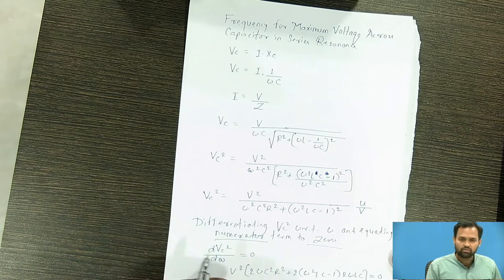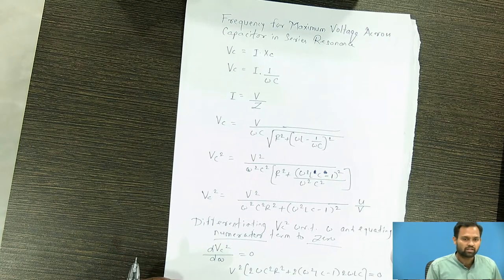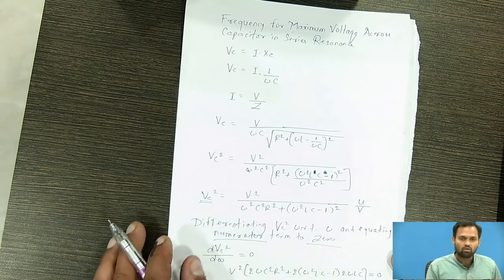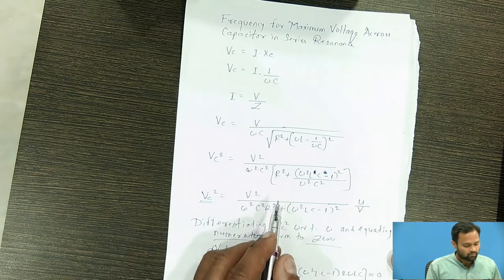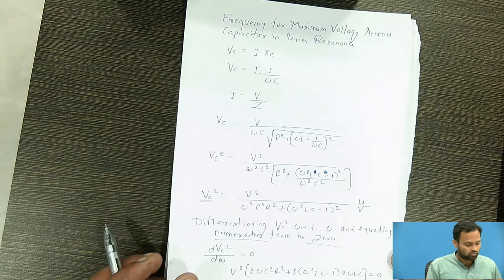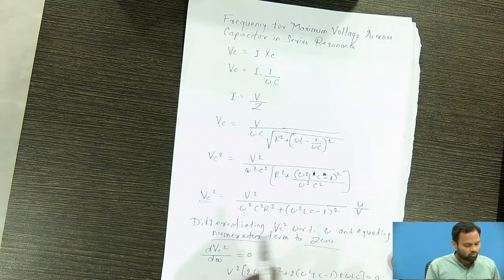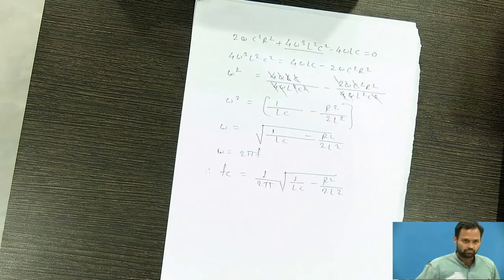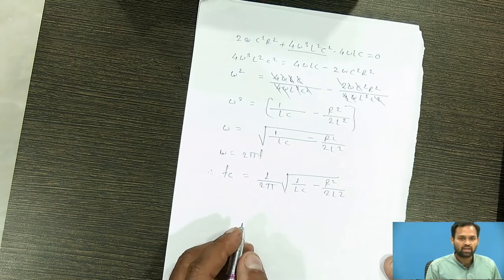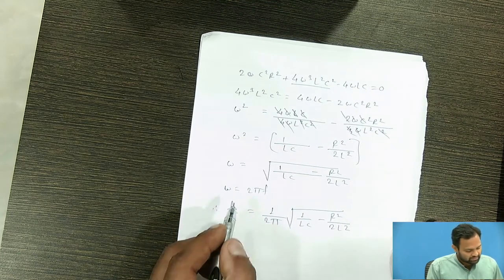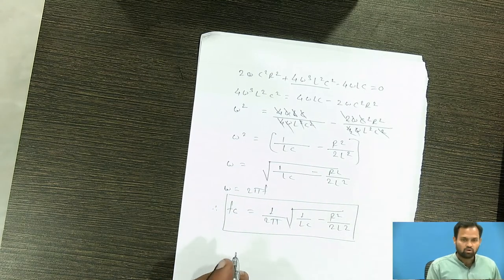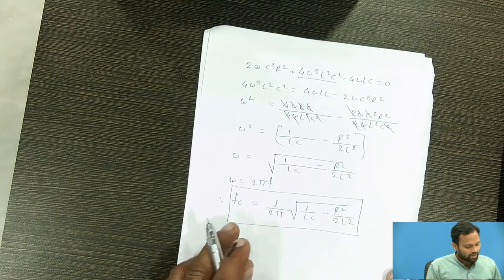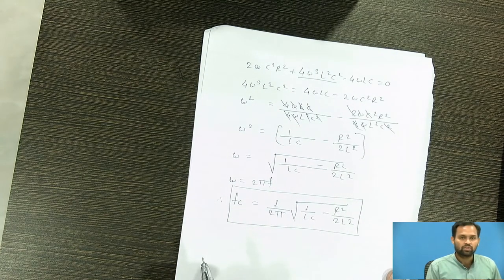If Vc is maximized, Vc squared is also maximized. To reduce mathematical calculation, we took the square of Vc, differentiated it, and equated to zero using the U by V rule. So Fc equals 1 upon 2π times under root of 1 by LC minus R squared upon 2L squared. This is the value of frequency at which voltage across capacitor is at its maximum.